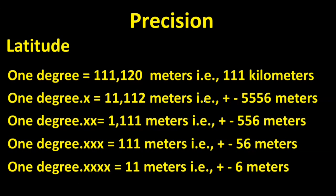Let's start with precision of latitude. For all intents and purposes, degrees of latitude stay constant wherever they are measured on the Earth. One degree of latitude encompasses approximately 111,120 meters — it varies slightly because the Earth is not an exact sphere, but this variance is inconsequential for SAR purposes. Adding one decimal of precision to 111,120 results in an area one-tenth of that, or 11,112 meters. A second decimal increases precision to 1,111 meters. A third decimal increases precision to plus or minus 56 meters, and a fourth decimal increases precision to plus or minus 6 meters. So for a decimal degree of latitude to be meaningful for SAR, it will usually need to contain either three or four decimals.